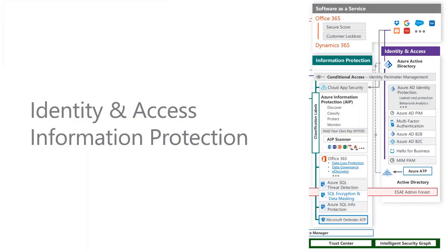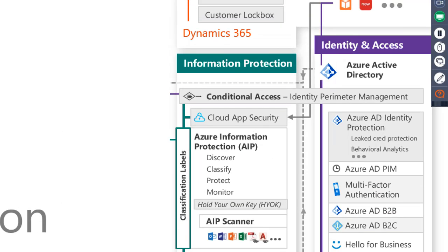Taking the cybersecurity reference architecture and breaking it down in the context of identity and access and information protection: the first thing is I can light up MFA, just turn on MFA — step one. Then we can layer in additional capability using Azure AD conditional access, which is right there, pretty high up in the architecture.